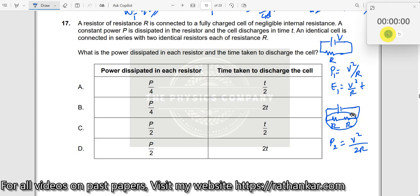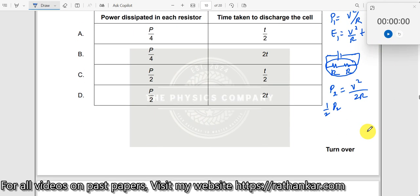The whole resistance here connection combined together will dissipate this much amount of energy, which means what? Each resistor would have dissipated half of this P2. Why half of P2? Because you see here identical resistors.